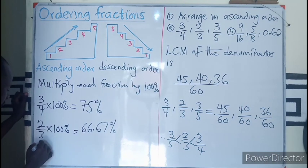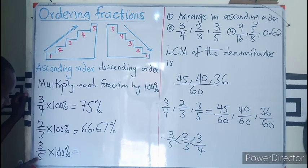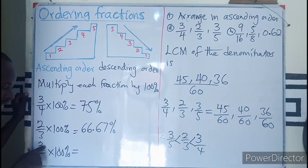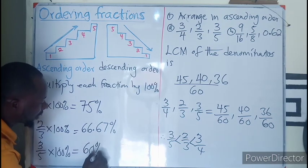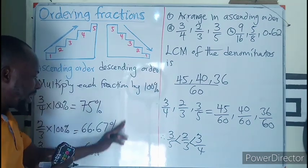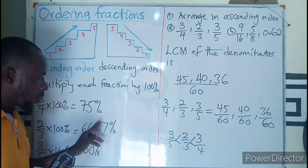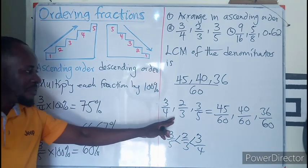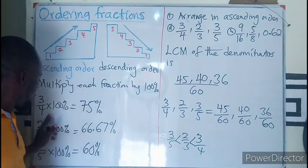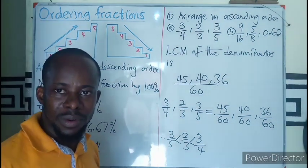What happened to the next one, which is 3 over 5 times 100 percent? 5 into 100, that would be 20. 20 times 3, that will give you 60 percent. So comparing the percentages, this is smaller than this and this is smaller than this. So comparing the percentages with our fractions, we can write 3 over 5 being less than 2 over 3, being less than 3 over 4. I believe we get the concept.